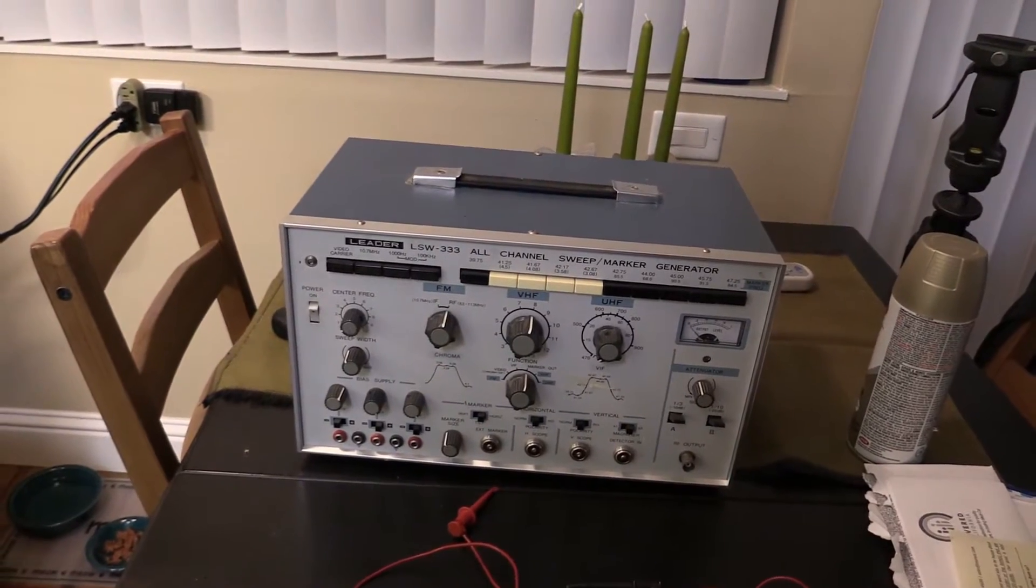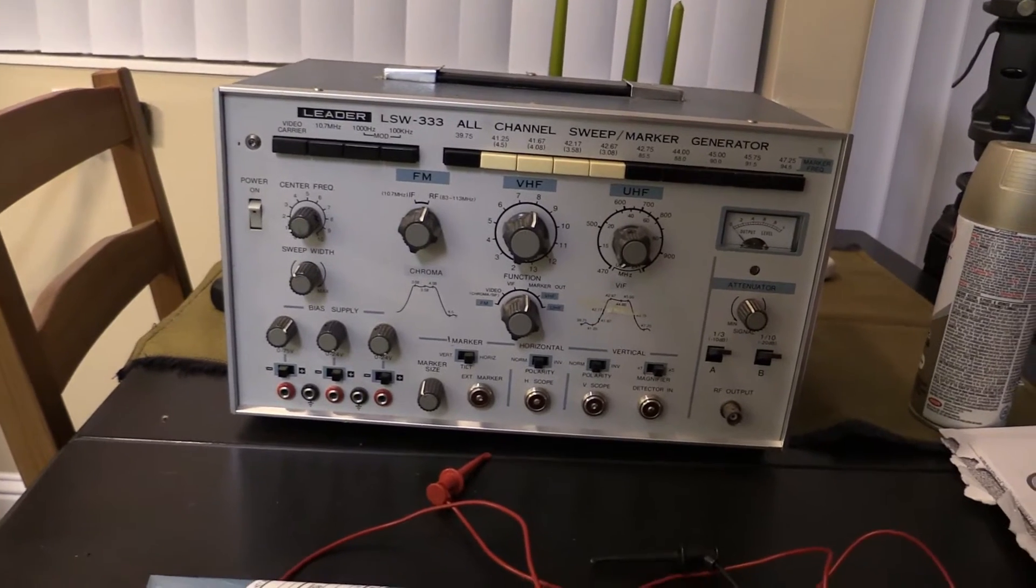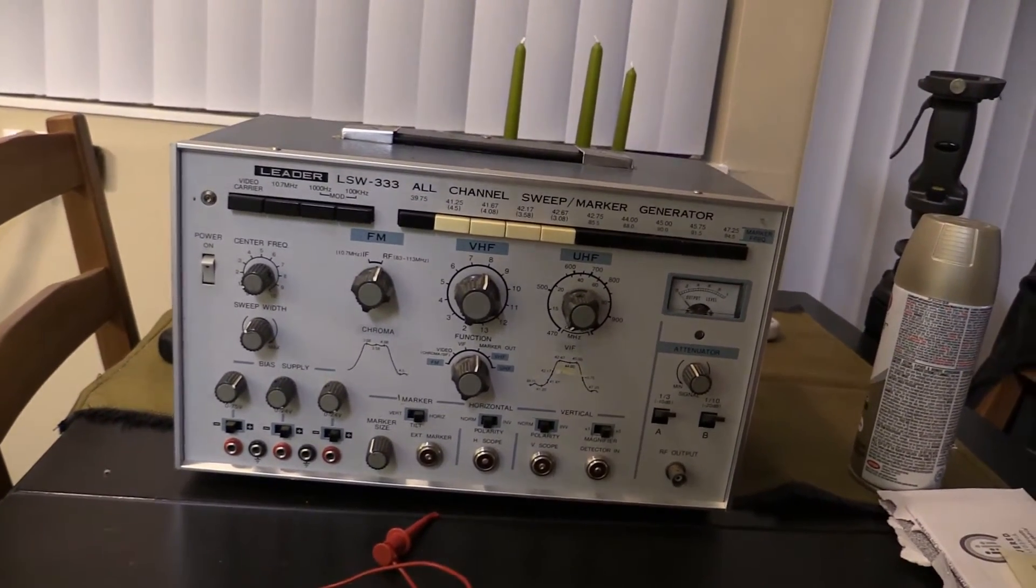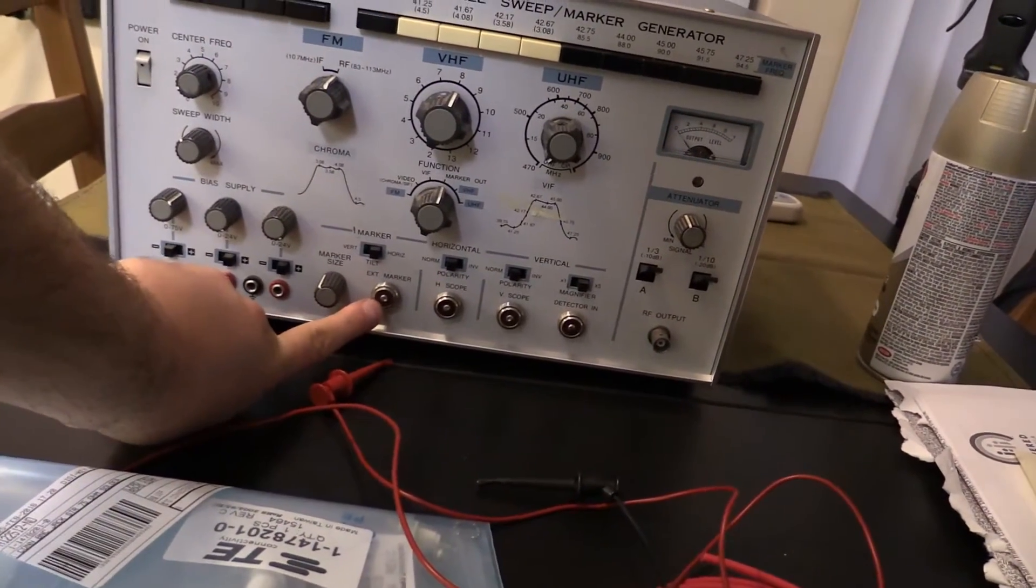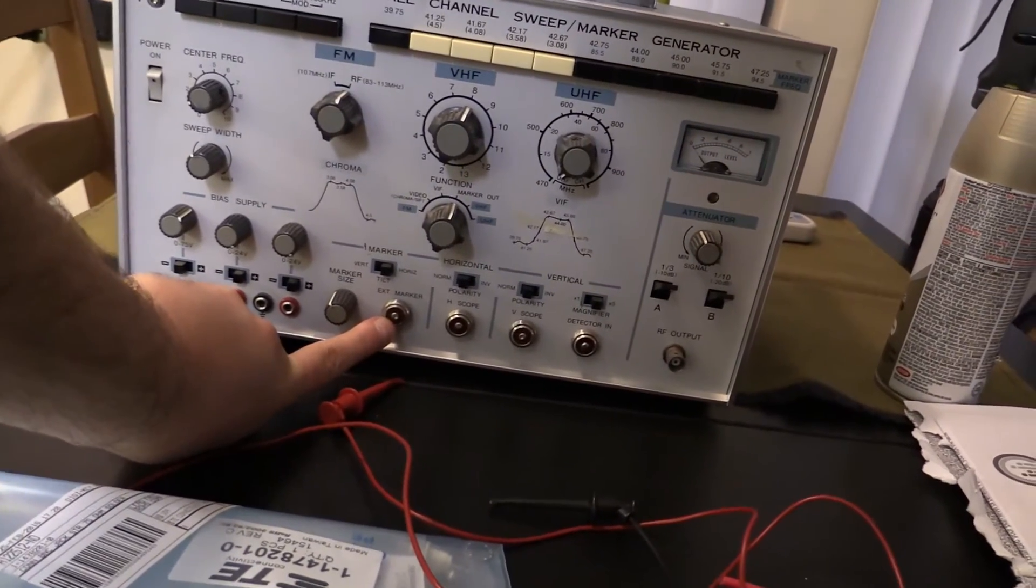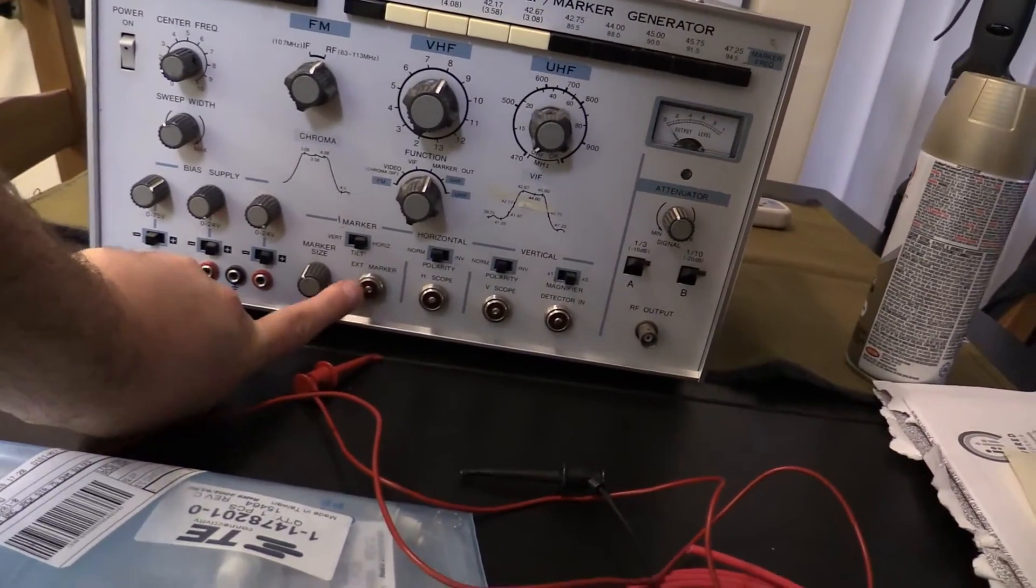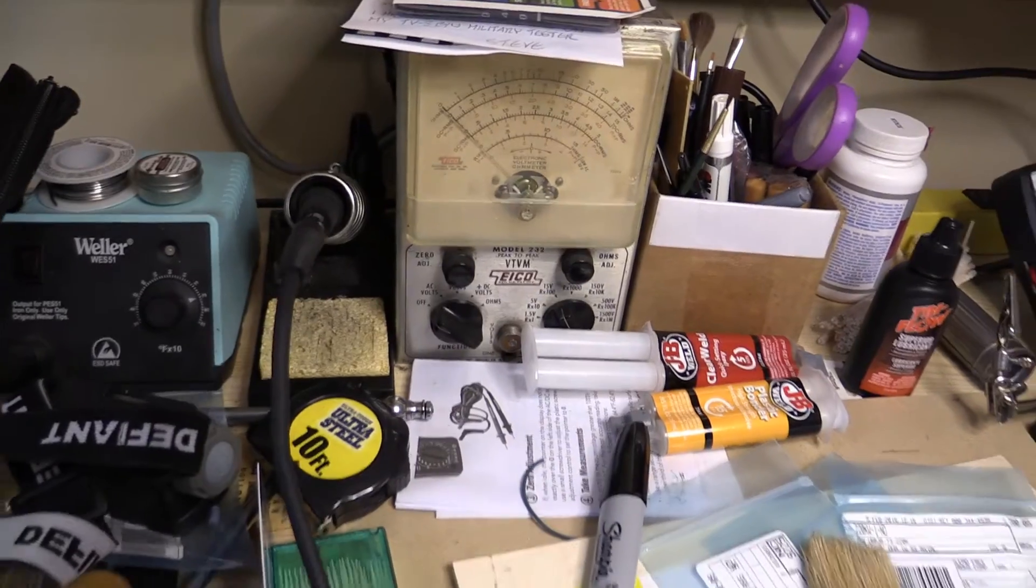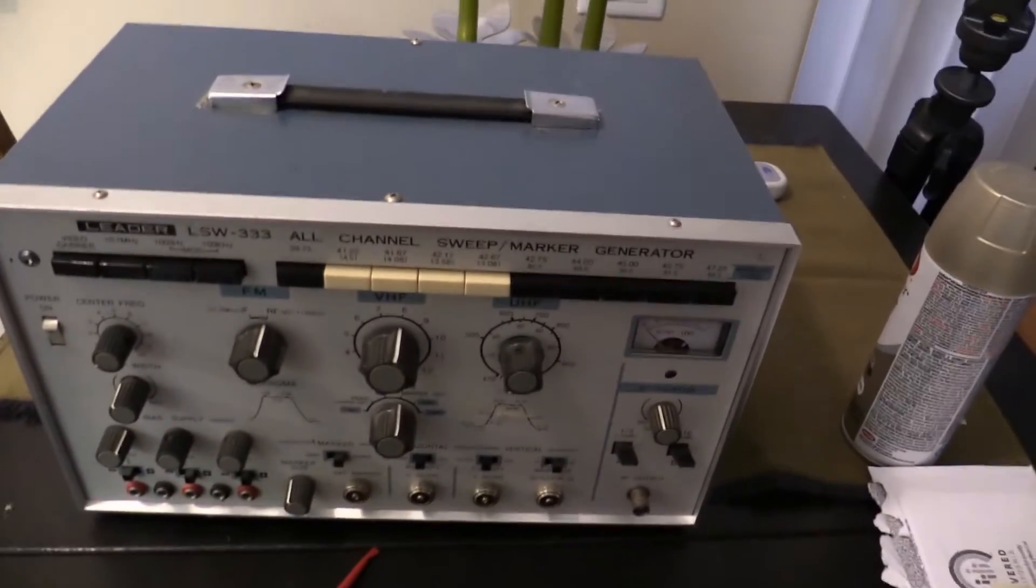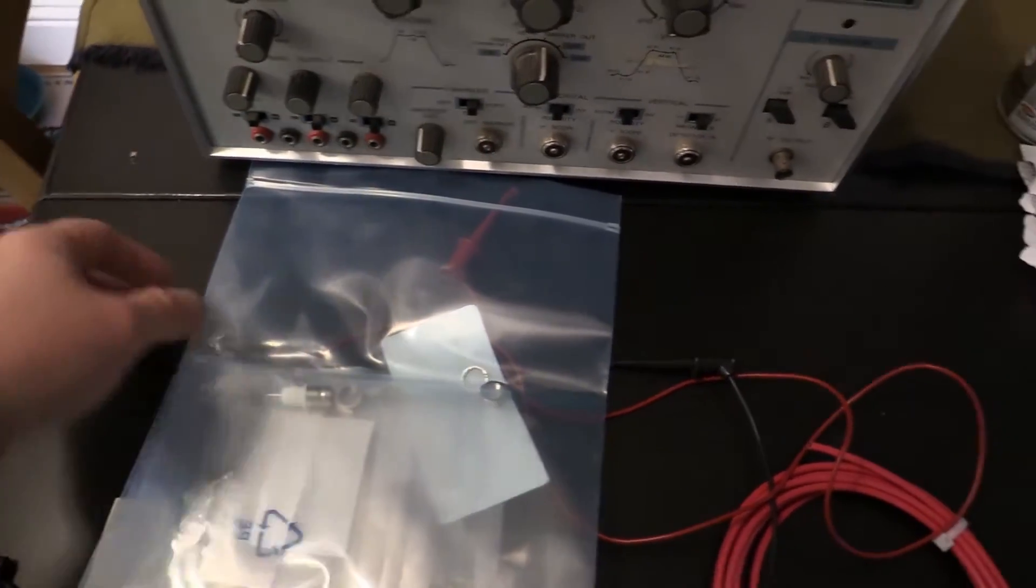Hello there, welcome back. This is my newest acquisition. It's a Leader LSW-333 Sweep Marker Generator. As you can see it has the old connector type that Heathkit was very fond of, the same kind of connector that my Ico uses. So the first order of business on this is to replace these with BNC connectors.